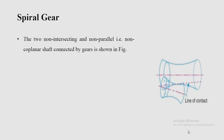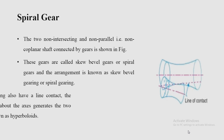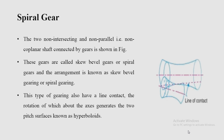In spiral gears, the two shafts are non-intersecting, non-parallel, and non-coplanar. Unlike bevel gears where shafts are coplanar, spiral gear shafts are non-coplanar. These gears are called skew bevel gears or spiral gears and the arrangement is known as skew bevel gearing. This type of gearing also has line contact, and the rotation about the axis generates surfaces known as hyperboloids.